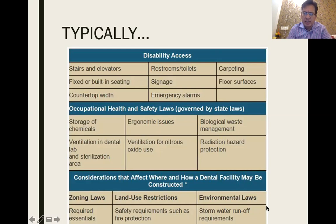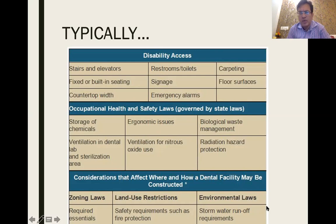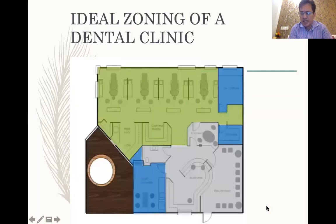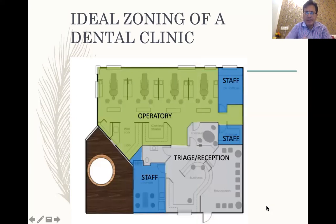The US typically has different designs from ours, including disability access, good signage, carpeting, countertops with emergency alarms, and occupational health and safety laws covering nitrous oxide, radiation hazards, and biological waste management. These standards are coming up in a big way in our country with the advent of the Clinical Establishment Act. Environmental factors, especially disposal of biomedical waste into the outer environment, also need to be considered. A typical zoning of a dental clinic includes an operatory, a triage, reception, and the staff zone.